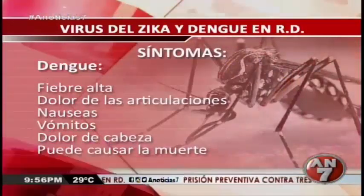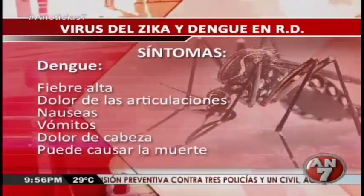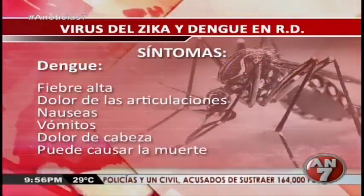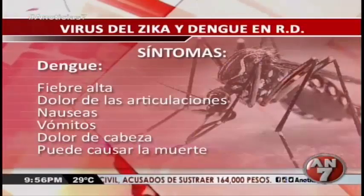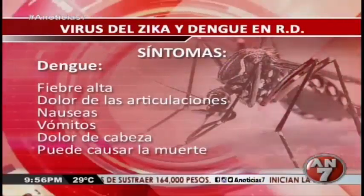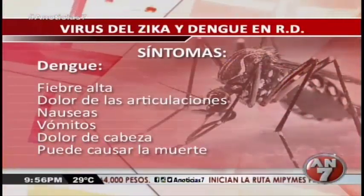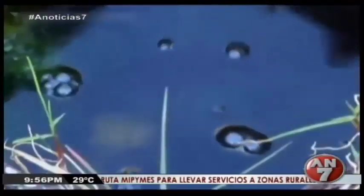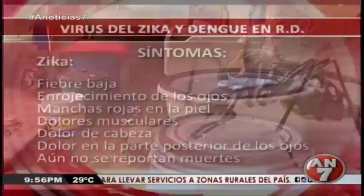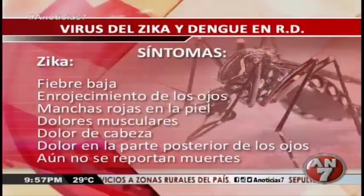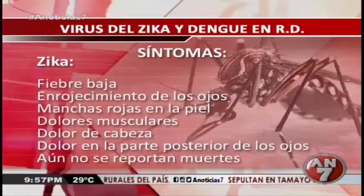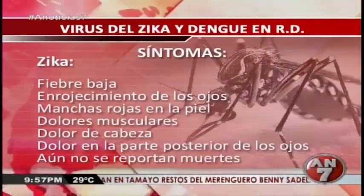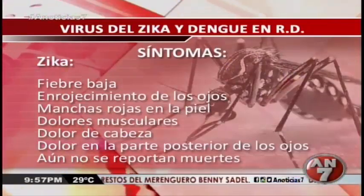About 1 in 5 people infected with Zika virus become ill. The most common symptoms are fever, rash, joint pain, or conjunctivitis. Other common symptoms include muscle pain and headache. The incubation period — the time from exposure to symptoms — is not known, but is likely to be a few days to a week. The illness is usually mild with symptoms lasting for several days to a week. Zika virus usually remains in the blood of an infected person for a few days but can be found longer in some people. Severe disease requiring hospitalization is uncommon, and deaths are rare.